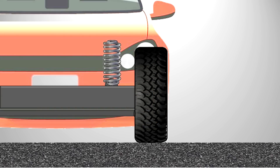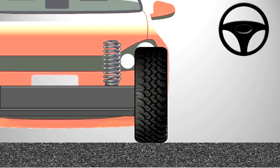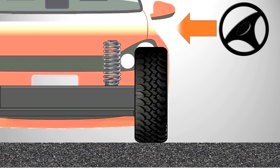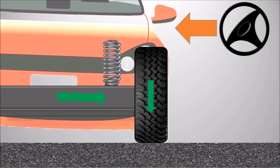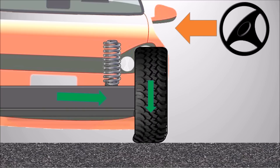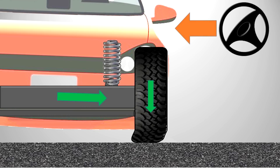When making a turn or cornering, due to the weight transference that comes from body roll and the lateral force applied to the tyres due to the centrifugal effect on the vehicle, the tyre walls deform, reducing the contact patch of the tyre on the road.